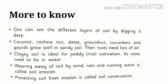One can see the different layers of soil by digging deep. Coconut, cashew nuts, groundnuts, cucumbers, and gourds grow well in sandy soil, as their roots need lots of air. Clay soil is ideal for paddy and rice cultivation, as its roots need to be in water. Wearing away of soil by wind, rain, and running water is called soil erosion. Protecting soil from erosion is called conservation.